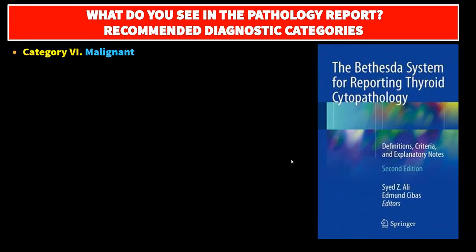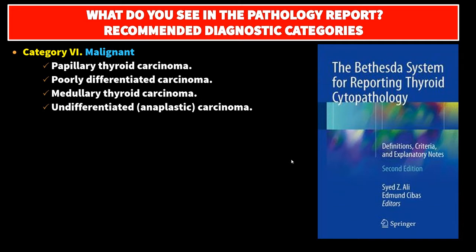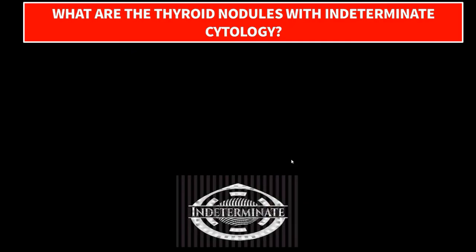Category 6: malignant, including papillary thyroid carcinoma, poorly differentiated carcinoma, medullary thyroid carcinoma, undifferentiated anaplastic carcinoma, squamous cell carcinoma, carcinoma with mixed features (specify), metastatic carcinoma, non-Hodgkin lymphoma, and other.